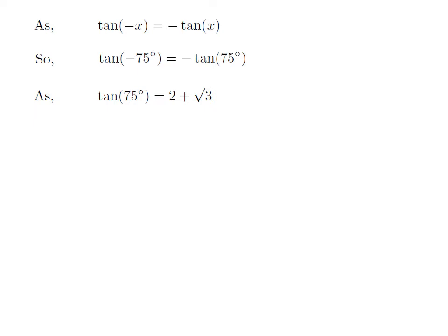The value of tan(75°) = 2 + √3. The video explaining how to find the value of tan(75°) is appearing in the upper right corner.